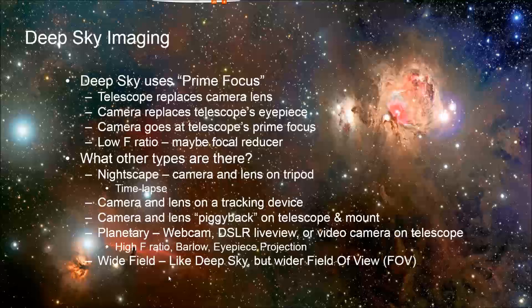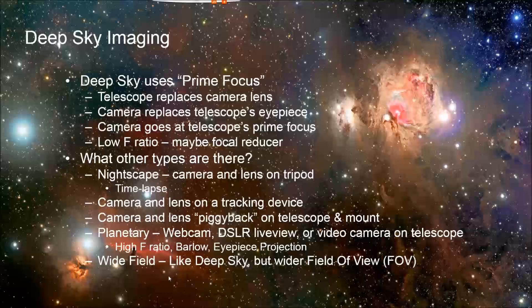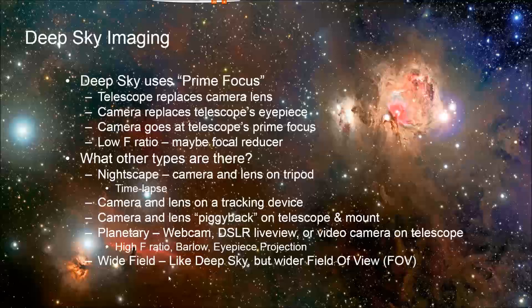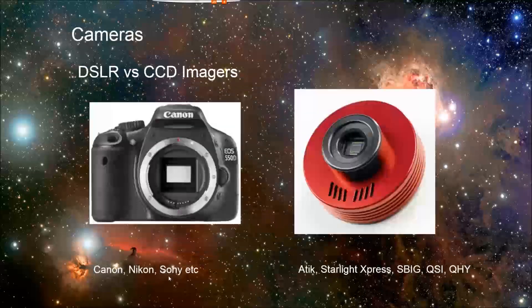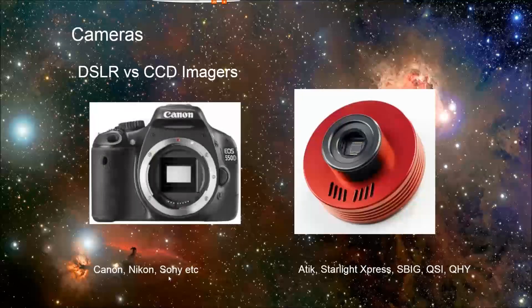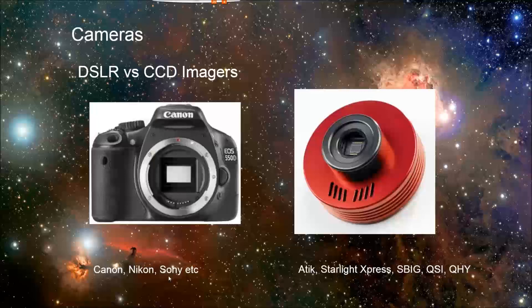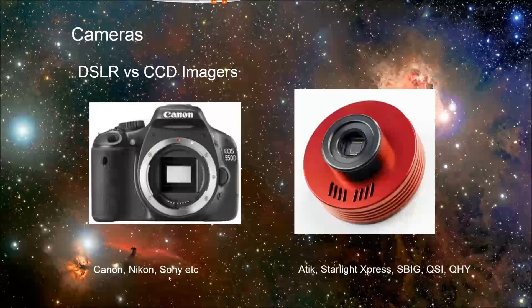It probably means that you're shooting for a low focal ratio, maybe even using a focal reducer to both increase the field of view but mainly to get a lower F-ratio so that your exposures can be shorter. There are two types of cameras typically used for deep sky: DSLRs and CCD imagers. Canon is probably the most popular brand for astrophotography DSLRs, and there's a whole range of prices and features on CCD cameras as well.